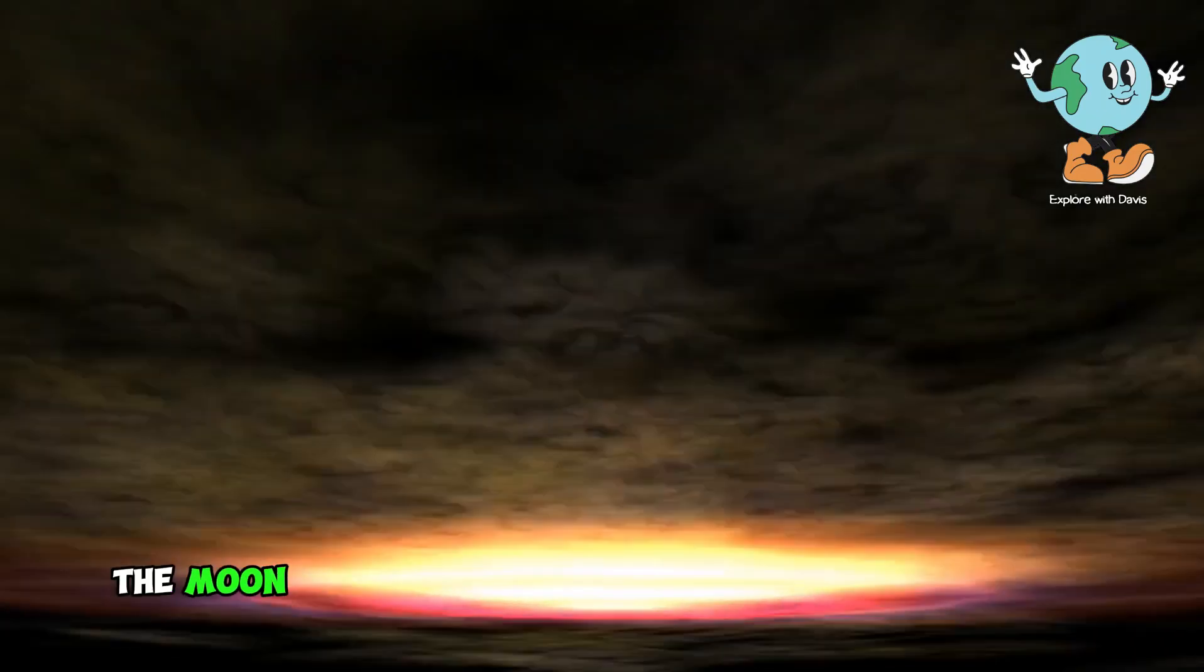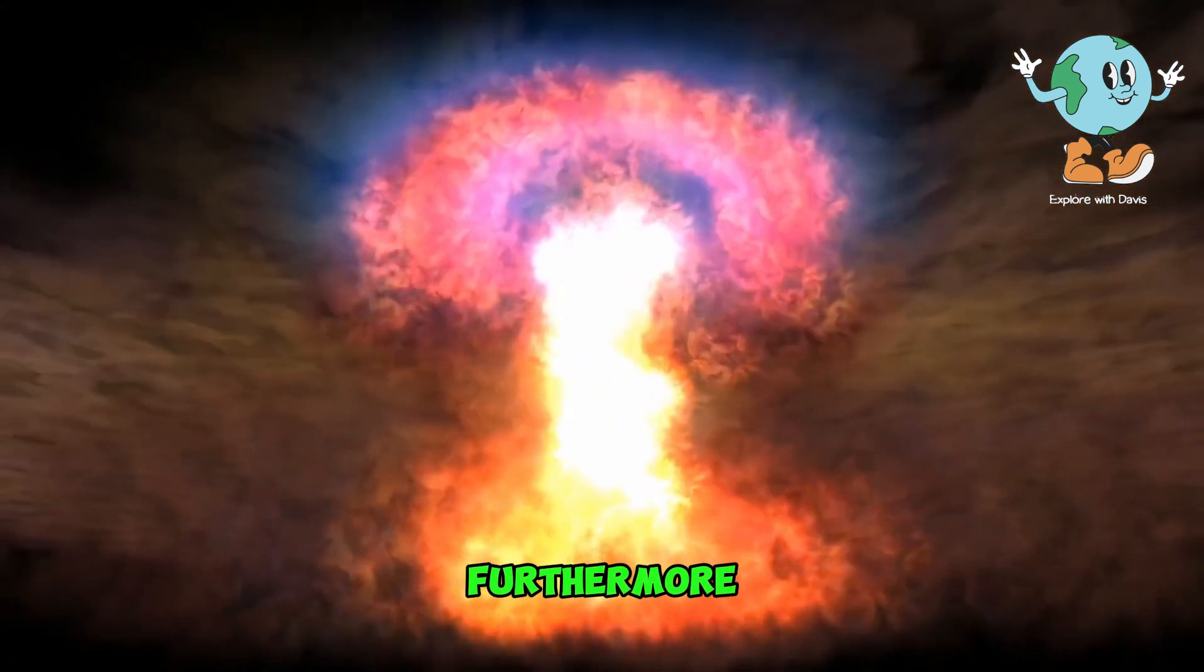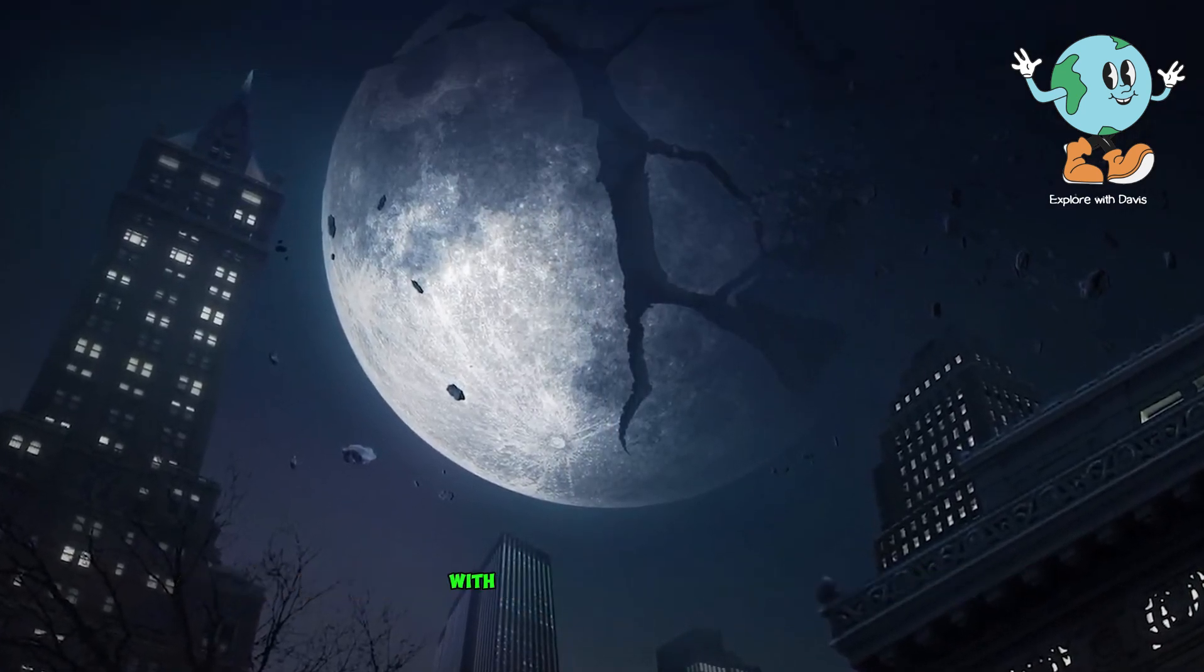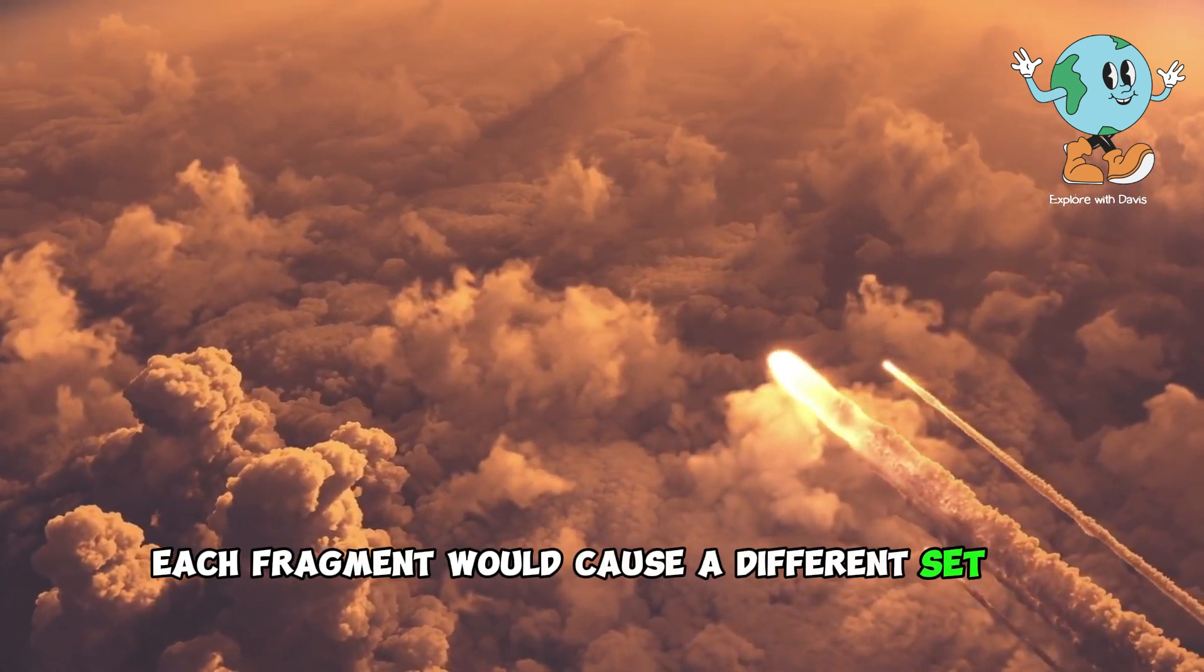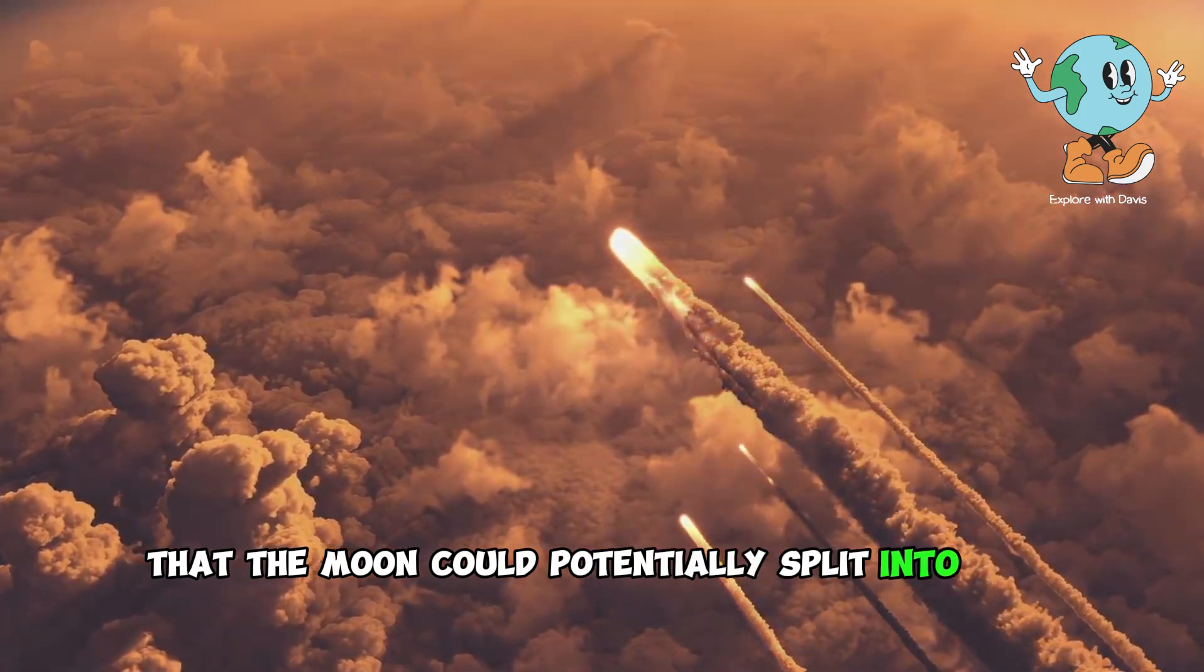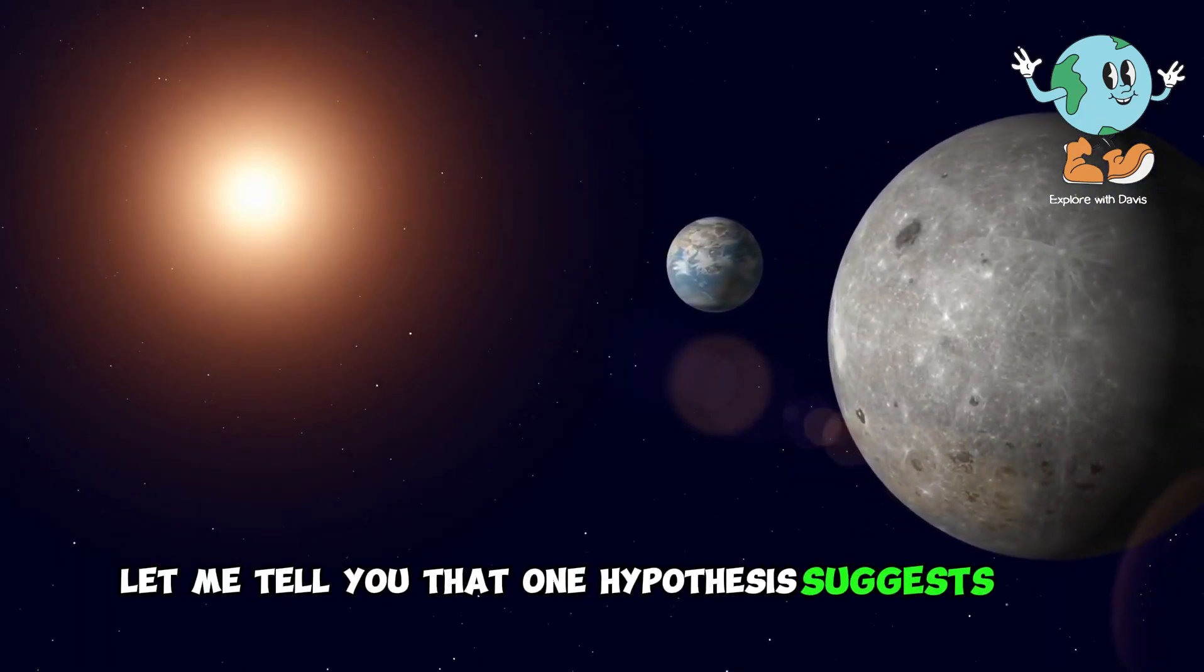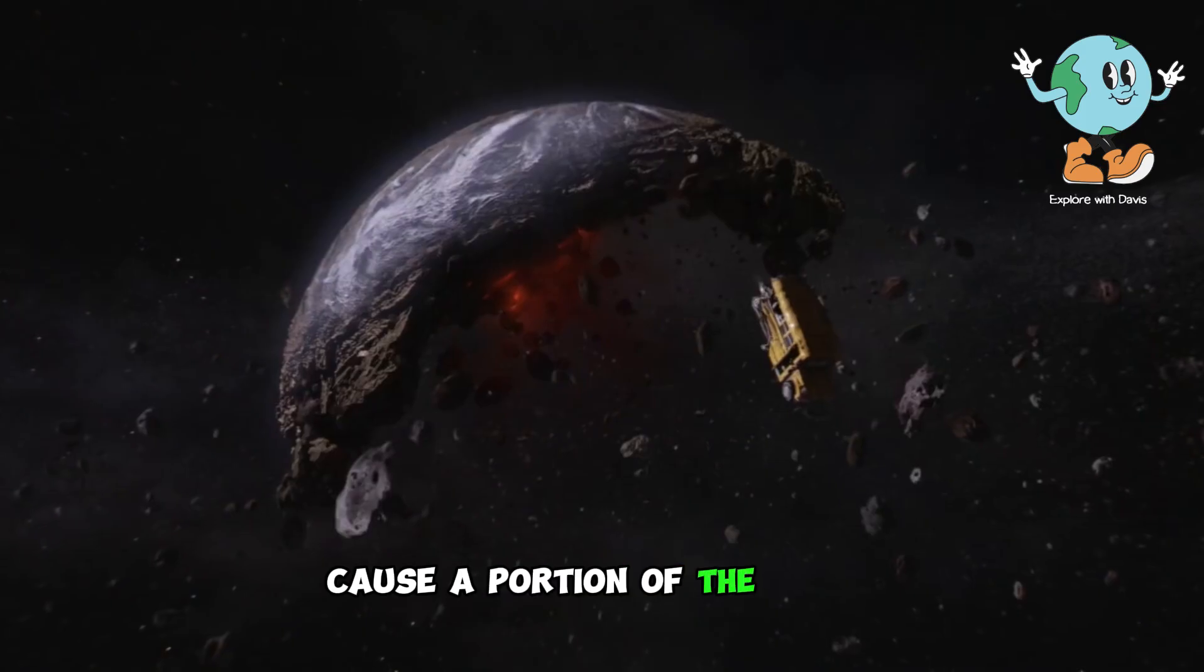The initial impact of the moon would resemble a colossal nuclear bomb that spreads across Earth. Furthermore, it is conceivable that the force of this collision could cause the moon itself to break apart, with its fragments scattering throughout the globe. Each fragment would cause a different set of disasters. If you find it surprising that the moon could potentially split into two parts upon collision with Earth, one hypothesis suggests that if the impact force is strong enough, it could indeed cause a portion of Earth itself to fracture.